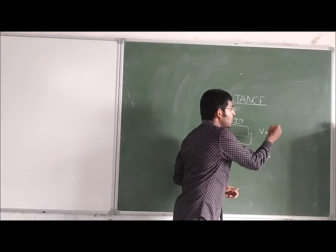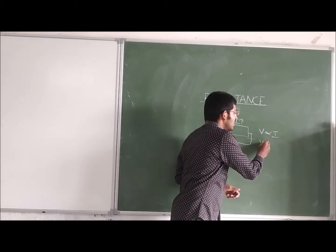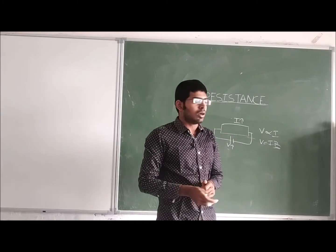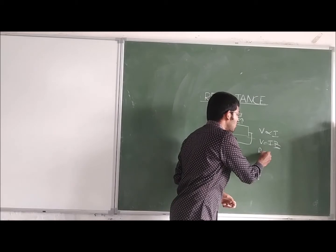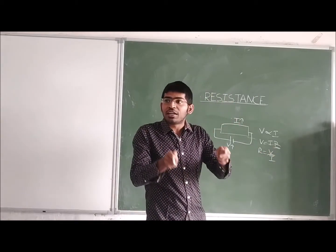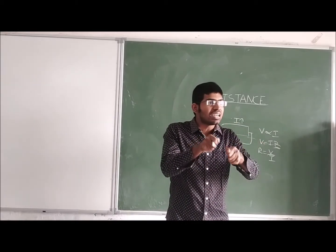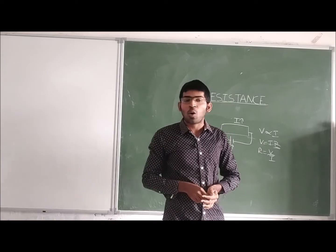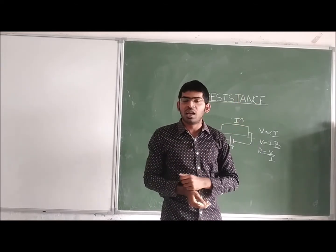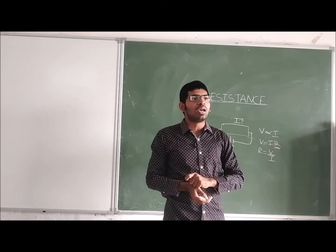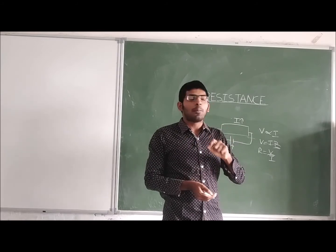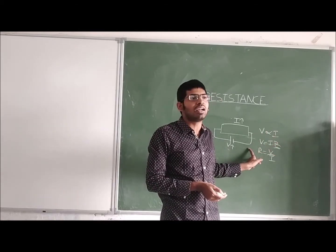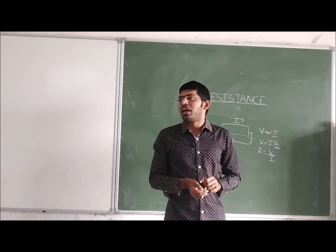Now what Ohm stated is: this current is directly proportional to the voltage applied. If you increase the voltage, the current also increases. So he mentioned V is directly proportional to I, and he introduced a constant: V equals IR. He said this constant R is called resistance. So the resistance R equals V divided by I — the ratio of voltage applied to the material to the current flowing through it. This voltage or potential difference is what drives free electrons to move in a single direction, producing a current.